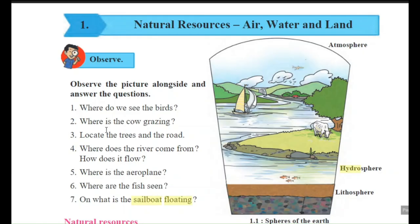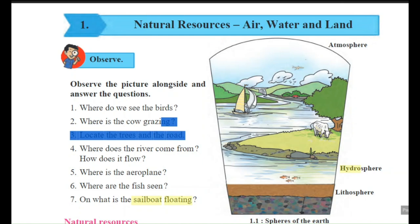Here seven questions are there. First question: where do we see the birds? The birds are flying in the sky, in air. So we can say in the atmosphere we can see the birds. Second question: where is the cow grazing? The cow is on land, so the cow is grazing on the land.